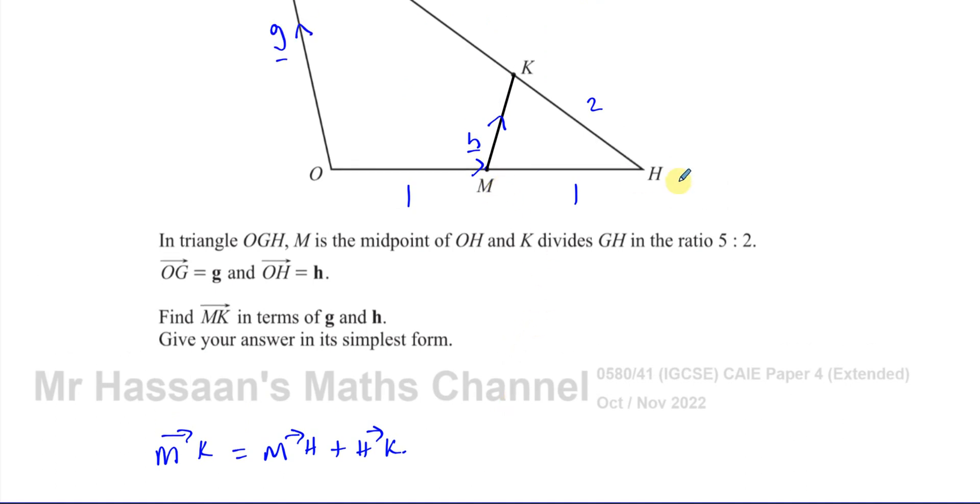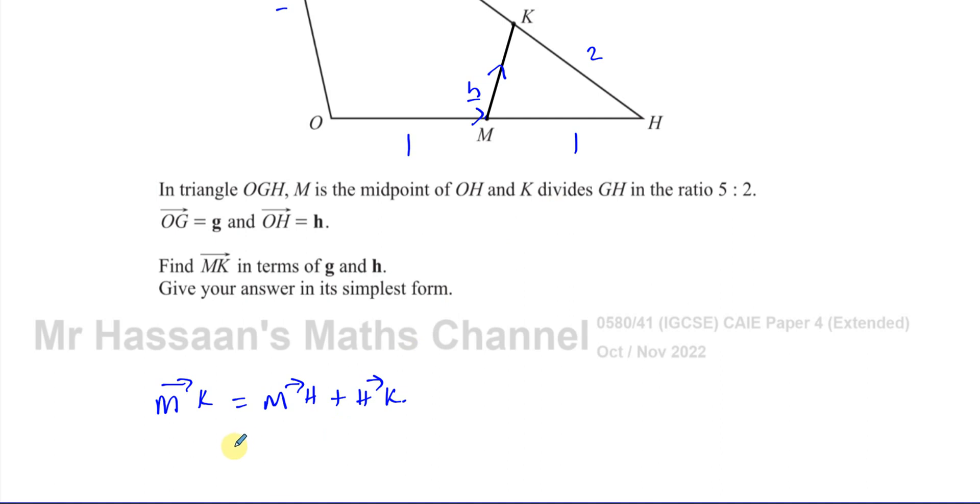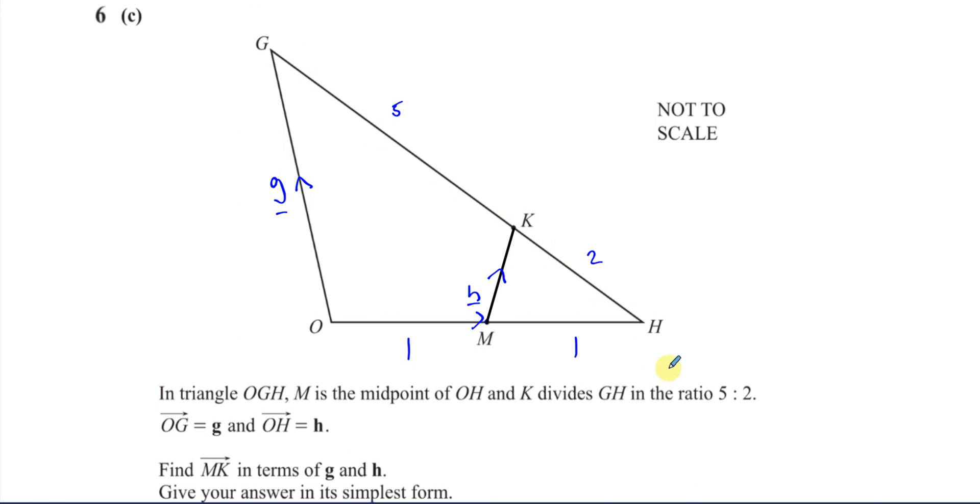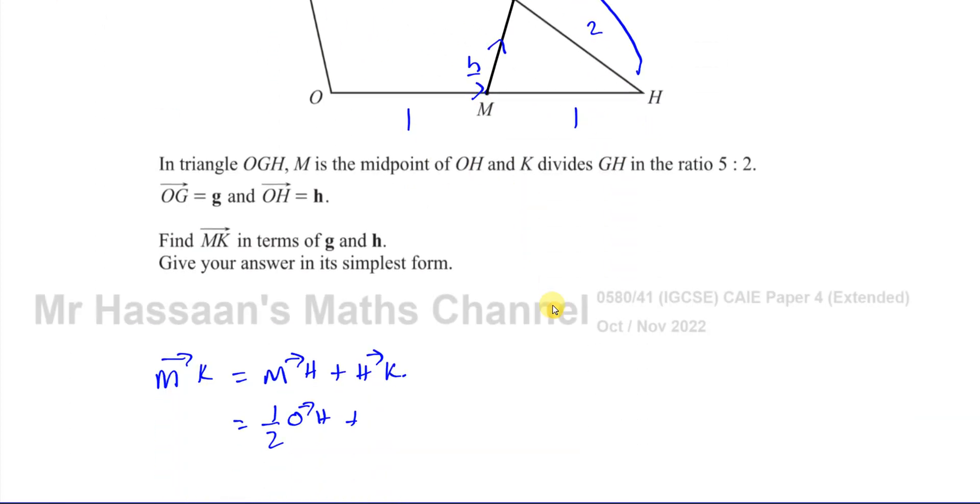So first of all, we're going to think about MH. Now I know that MH is a half of OH. This is a half of OH. Because this is the vector h, and this M divides us into two equal halves. So from O to H is h, so M to H is a half of that. And I know that HK is a fraction of the line HG. But what fraction is it? Well, this is two parts and this is five parts. So the total number of parts is seven. So HK is two parts out of seven parts of HG.